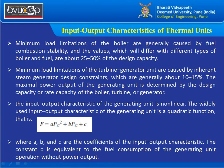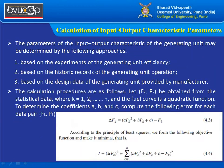The maximum power output of the generation unit is determined by the design capacity or rated capacity from the boiler, turbine, or generator. The input-output characteristics are non-linear — at every instant, power generated per unit of fuel consumed varies. The most widely used representation is the quadratic function: F = a·Pg² + b·Pg + c, where a, b, c are coefficients and c is a constant representing fuel consumption at zero power output.